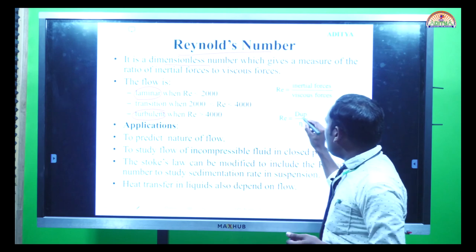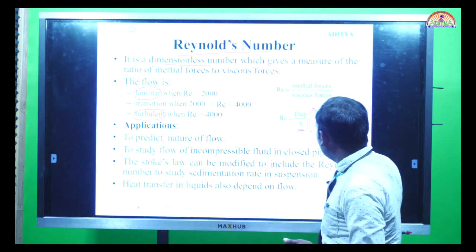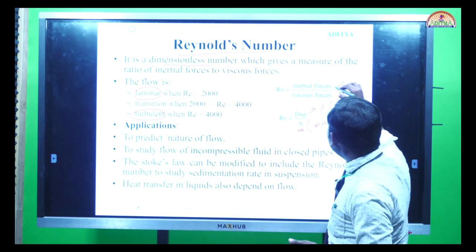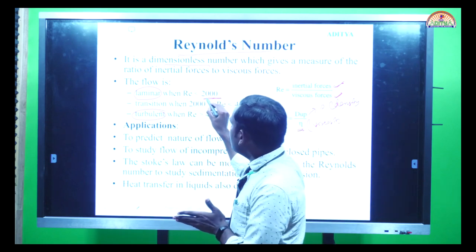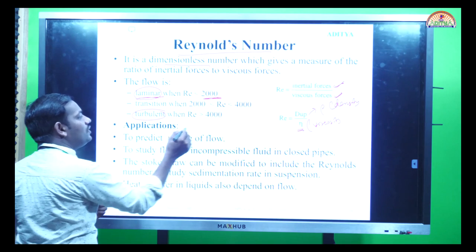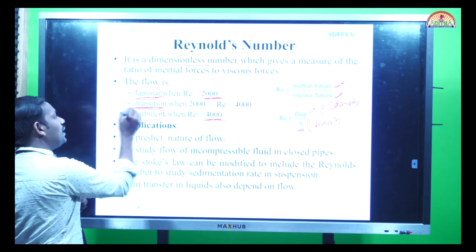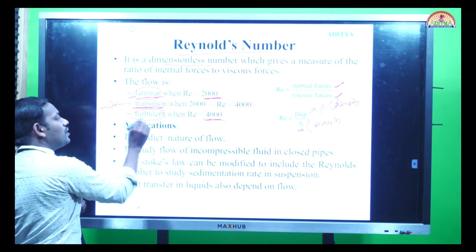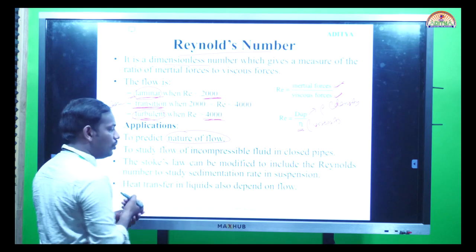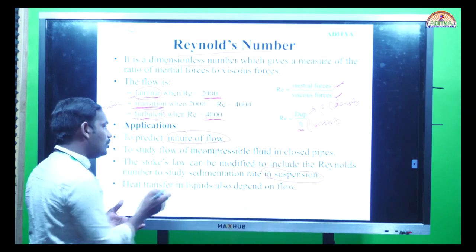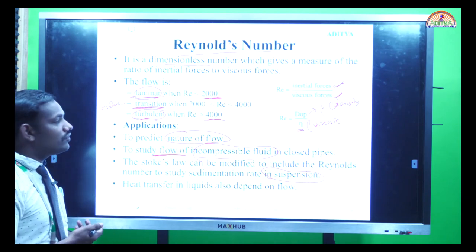When you plug in all the values and calculate the Reynolds number: if the number is less than 2000, the fluid flow is laminar; if greater than 4000, it is turbulent; and if between 2000 and 4000, it is transitional — not completely laminar and not completely turbulent. The uses of Reynolds number include predicting the nature of flow, studying sedimentation in suspensions, and studying the flow of incompressible fluids.